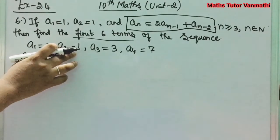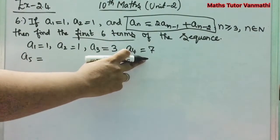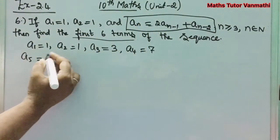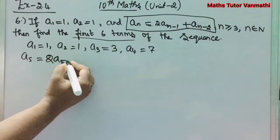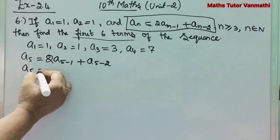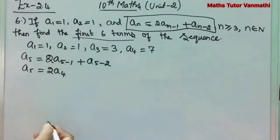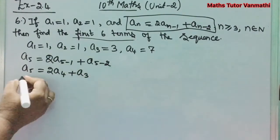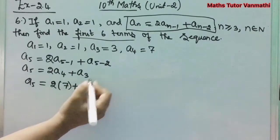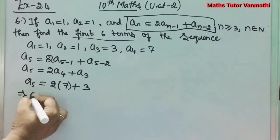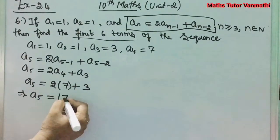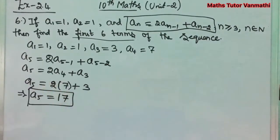We have a_1 = 1, a_2 = 1, a_3 = 3, a_4 = 7. Now finding a_5: substituting n = 5, a_5 = 2a_4 + a_3 = 2×7 + 3 = 14 + 3 = 17. So a_5 = 17.